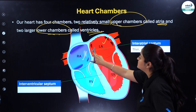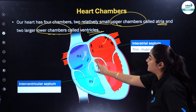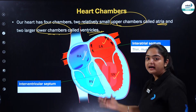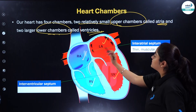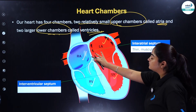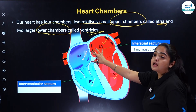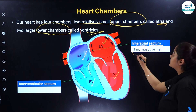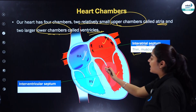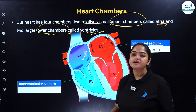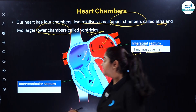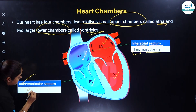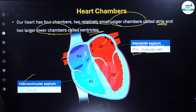Now, if you look at the septum — there is a wall which is basically dividing the chambers. The upper chambers are divided by the interatrial septum, which is comparatively thin and muscular, and the lower chambers are divided by the interventricular septum, which is comparatively thick.